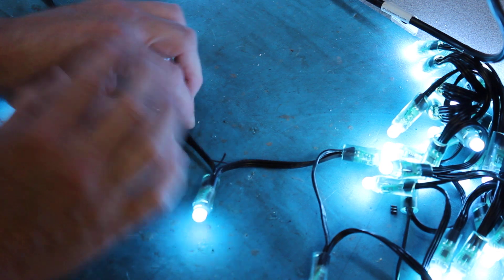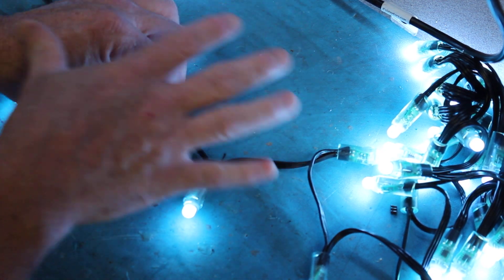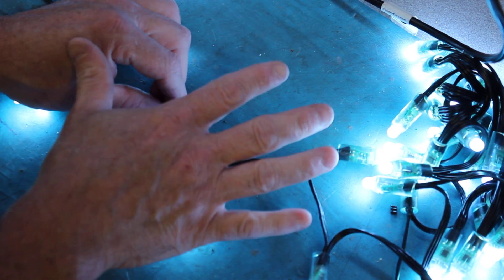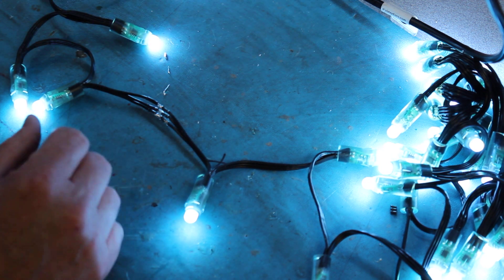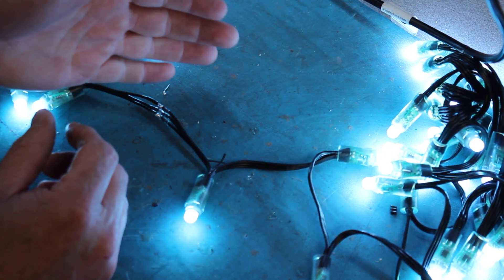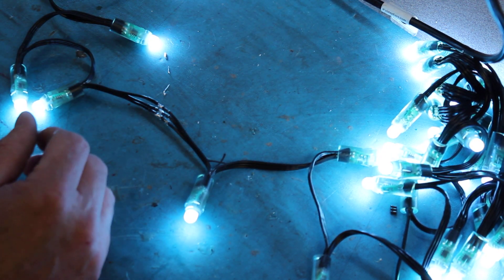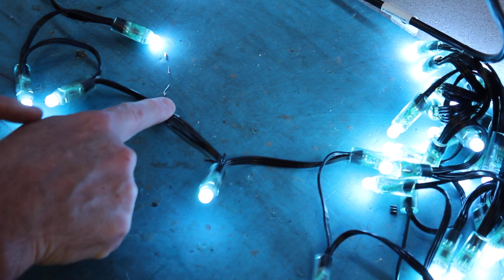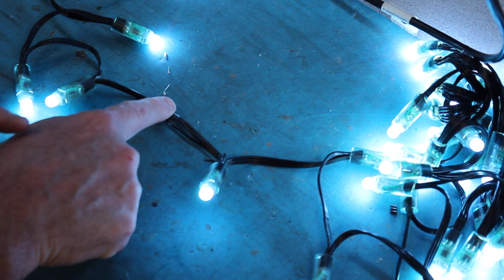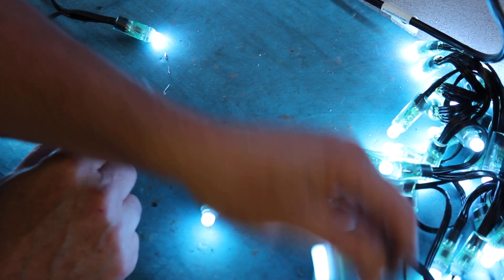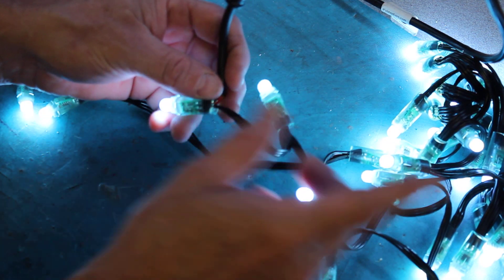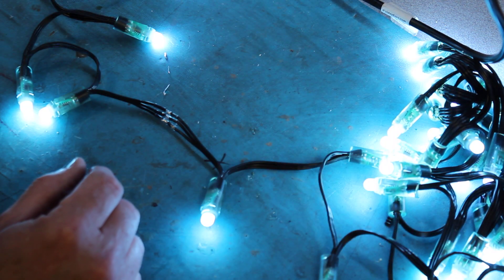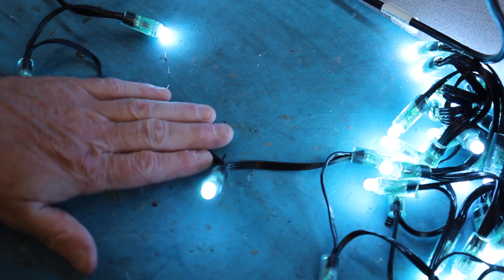Now, if you do have additional pixels, now that we've removed two of the pixels in this string. And let's say that it's a 50 count string. You need a total of 50. Now you have 48. If you need to add them in, you could add them in right here, right at the beginning, right where we made the splice. Or often, if you're using strings that you have to extend anyway, just add them to the end of the string. And that's how we repair a mid-span break.